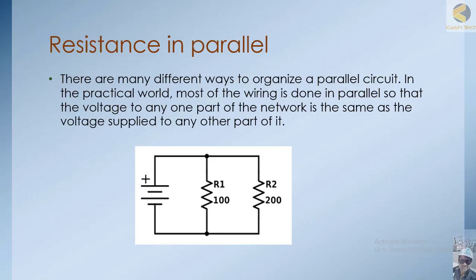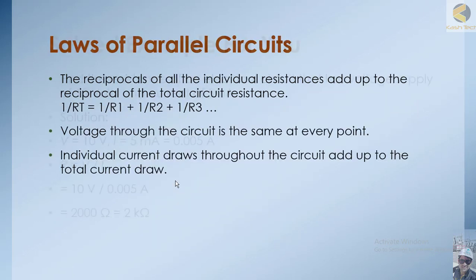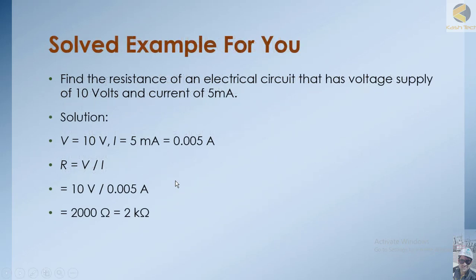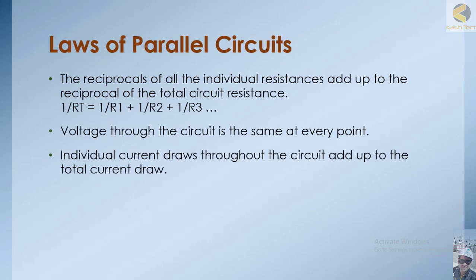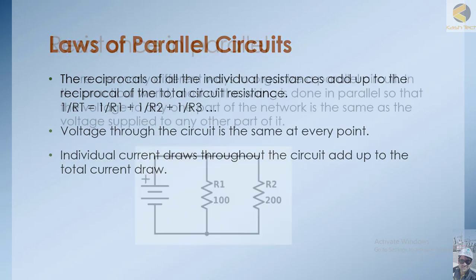This was all about the parallel circuit and the law we discussed. For further understanding, I have also shown an example: find the resistance of an electrical circuit that has a voltage supply of 10 volts and a current of 5 milliamperes. Using Ohm's law, V = 10 volts, I = 5 milliamperes, so R = 2 kilohms. I hope you liked the lecture; we will move to the next topic. Thank you very much.